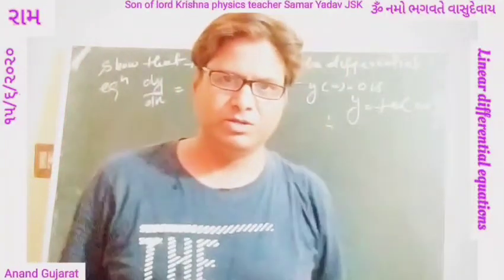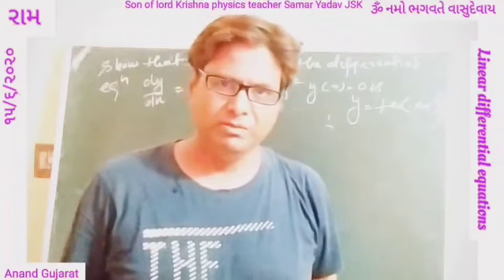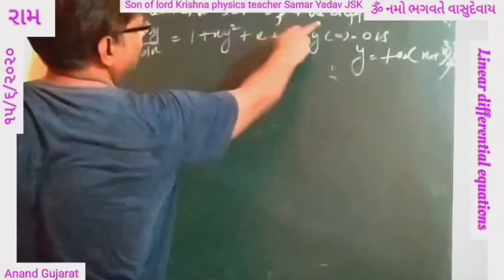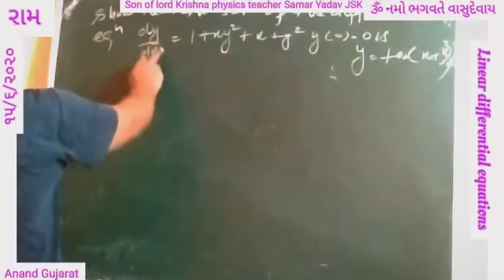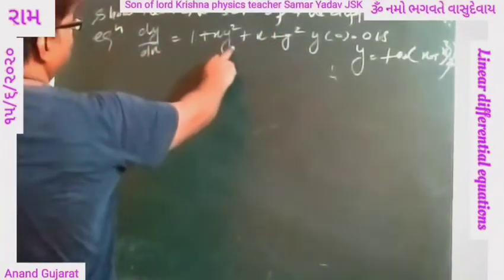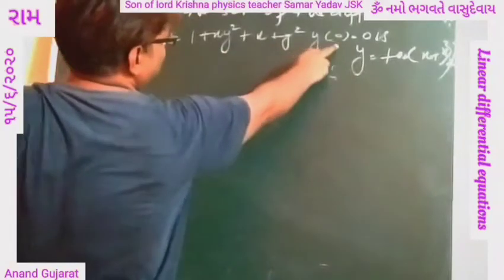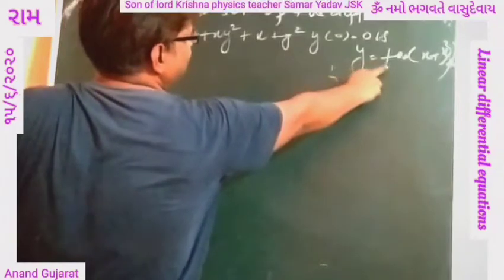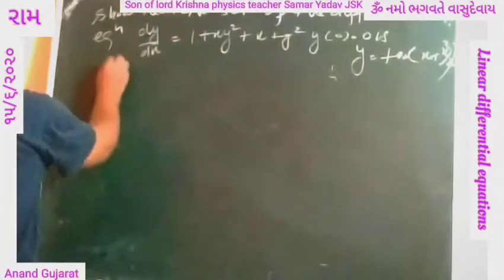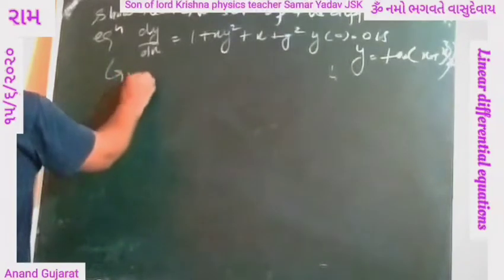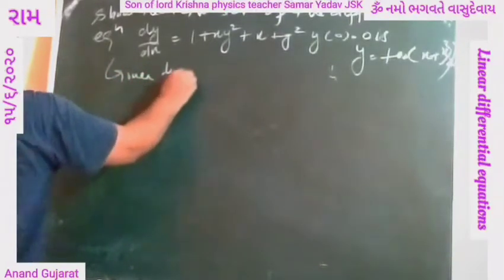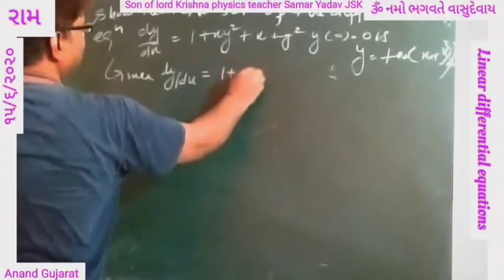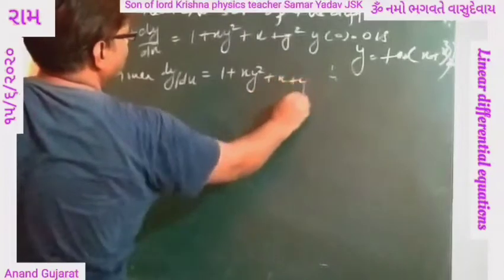Today in mathematics, a linear differential equation. The numerical is: find the solution of the differential equation dy/dx = 1 + xy² + x + y², where y(0) = 0. We have to show that y = tan(x + x²/2). Here, dy/dx = 1 + xy² + x + y².